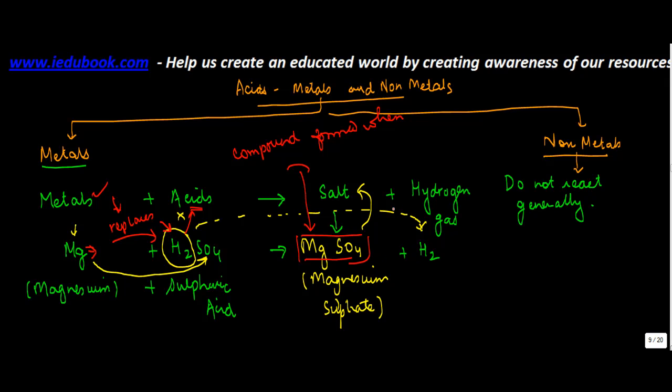So magnesium sulphate is nothing but a salt which is formed when magnesium reacts with sulphuric acid. So hydrogen becomes an independent element in the process, and the balance part reacts with the metal to form a salt which is magnesium sulphate in this case. Now as I told you, normally it's not that all metals react with acid. Some of them may not react also.